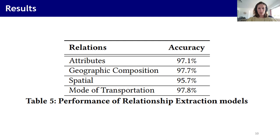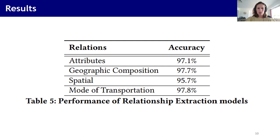Here are the results: all classifications achieve an accuracy above 95%, which is really good. However, these results have to be qualified, as they might be biased because of the small and imbalanced classes, especially for mode of transportation, since we only had a dataset of 216 relations and they were totally imbalanced. Nevertheless, overall our proposed workflow performed well, and we achieved partial entity and relationship identification. We separately evaluated each model, which does not represent the global performance of the pipeline, but it's still pretty good.